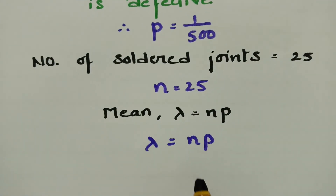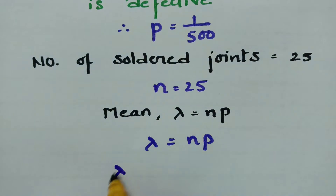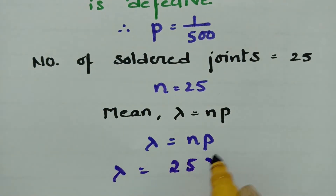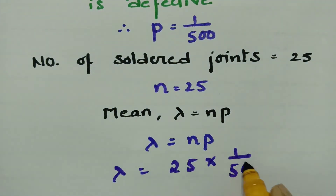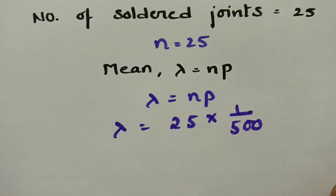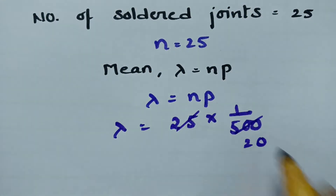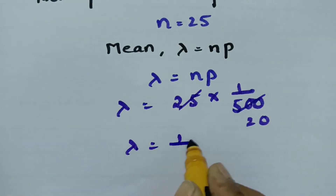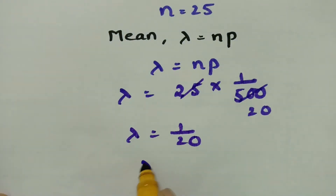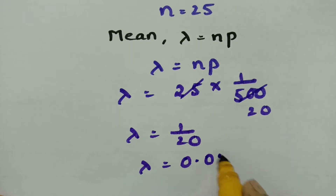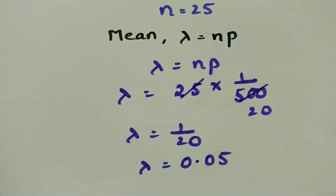First of all we have to calculate the mean value. Mean is equal to N into P. N is 25 and P is 1 by 500. Cancelling, 25 divided by 500 gives 1 by 20. So lambda is equal to 1 by 20, which is 0.05. This is the value of lambda.